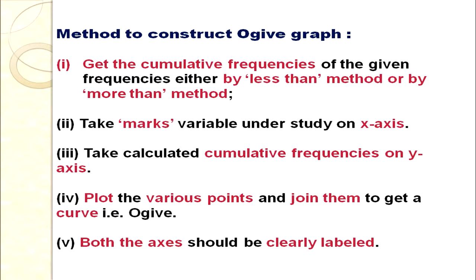The steps for constructing ogives: first calculate cumulative frequencies. Then take the variable under study on the x-axis and cumulative frequencies on the y-axis. Plot the various points and join them with a smooth curve. For less than, plot the less than data; for more than, plot the more than data. Both axes should be labelled clearly.